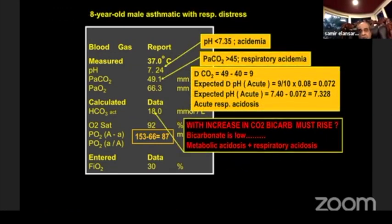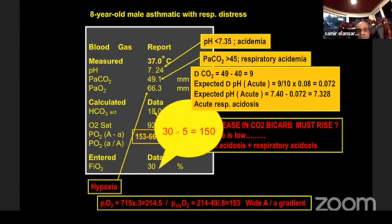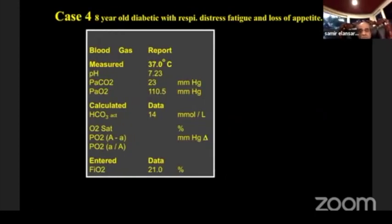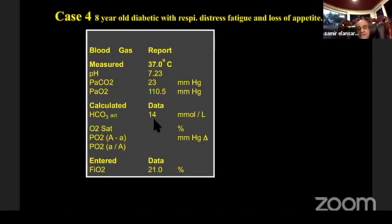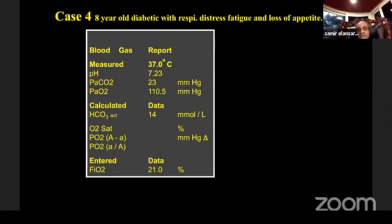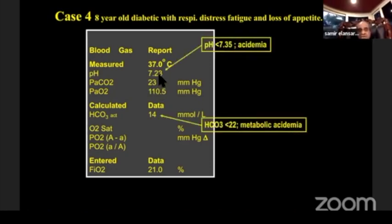Case 4: Acidotic with pH drop, CO2 drop, and bicarb drop — all going down together, so this is metabolic acidosis. Bicarb dropped by about 10 mmHg; multiply by 1.2 to get expected CO2 drop of 12. The CO2 is approximately 23, so it is compensated. Oxygenation is acceptable at 110 mmHg receiving 21% FiO2. There is also a high anion gap, confirming high anion gap metabolic acidosis.